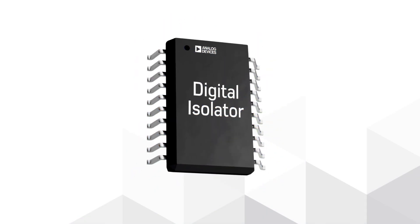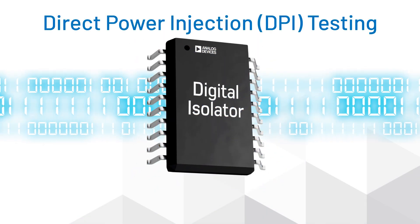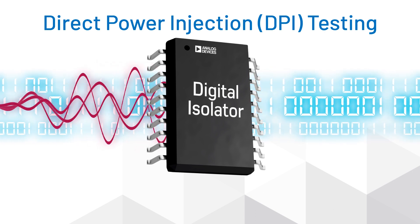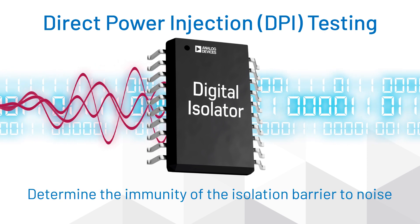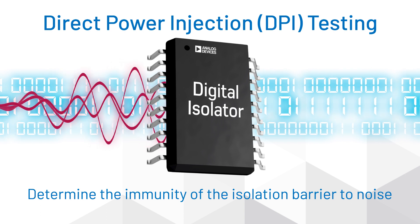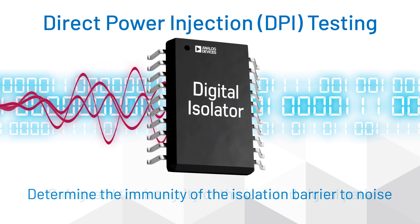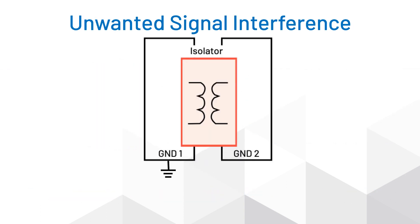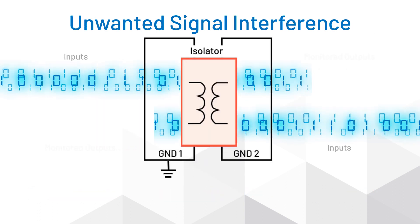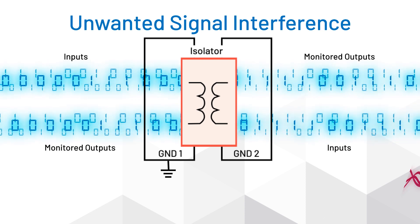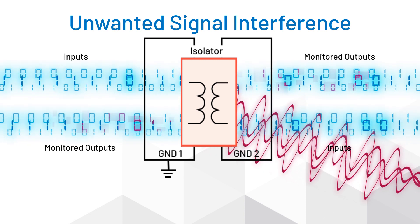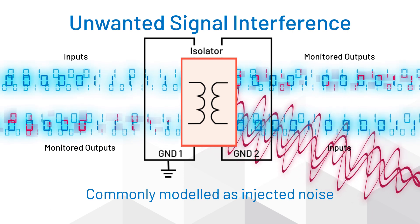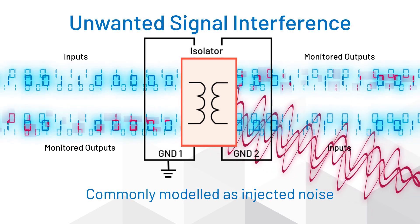Real-world harsh environments are tricky to replicate. Test with direct power injection to ensure the highest level of noise immunity for your isolated system. To ensure the integrity of the data as it crosses the isolation barrier, the system must be immune to noise at all frequencies, even up to 1 GHz.